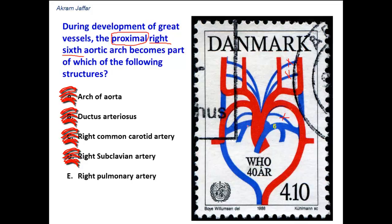Option E: right pulmonary artery. The right pulmonary artery is derived from the 6th aortic arch. Both pulmonary arteries are derived from the 6th aortic arch. On the left side, the whole 6th arch persists — the proximal part forms the left pulmonary artery, and the distal part forms the ductus arteriosus, which later becomes the ligamentum arteriosum. But on the right side, only the proximal part of the 6th aortic arch persists; the distal part disappears. Therefore, the proximal part of the right 6th aortic arch forms the right pulmonary artery.